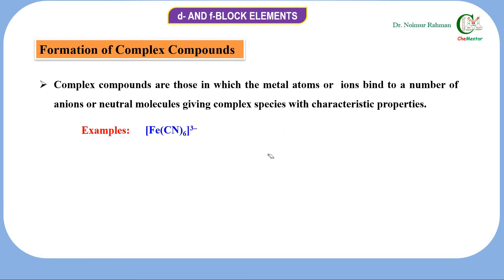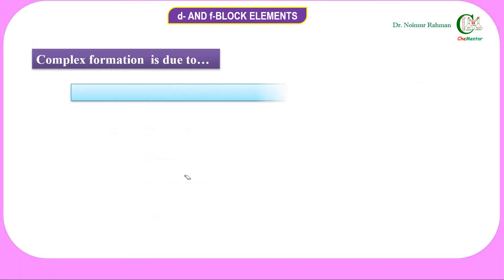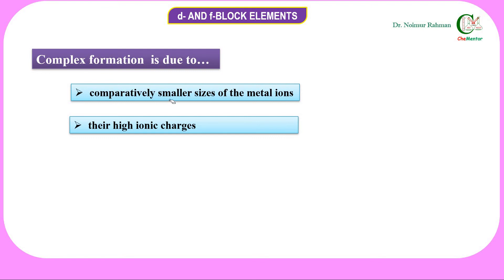For example, [Fe(CN)₆]³⁻, [Fe(CN)₆]⁴⁻, [Cu(NH₃)₄]²⁺, [VPtCl₄]²⁻ are all examples of complex compounds. Complex formation is possible due to comparatively smaller sizes of the metal ions, their high ionic charges, and the vacant d orbitals availability.